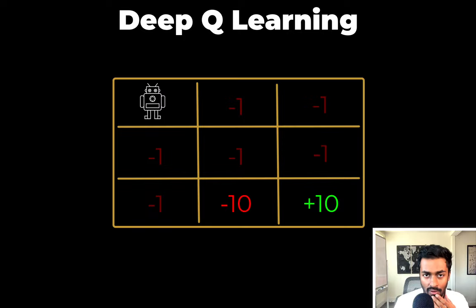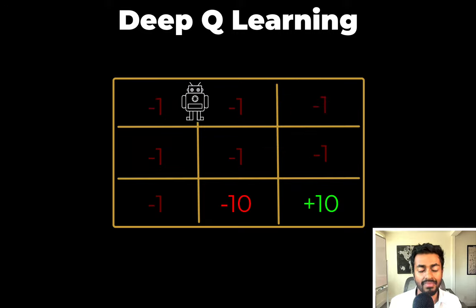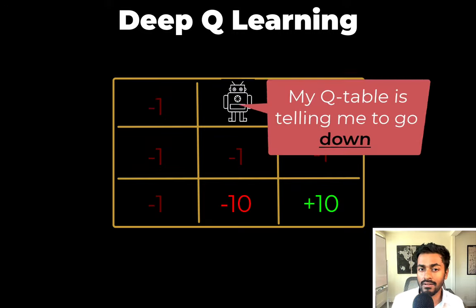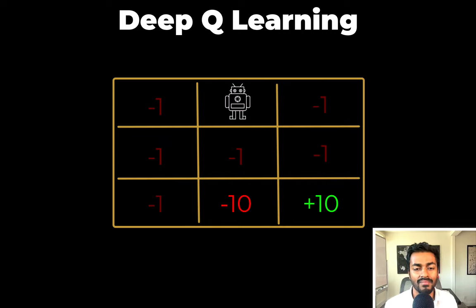So what do you want to do here, Frank? My Q-table is telling me to go right. Now that you're there, what about now? My Q-table is telling me to go down.